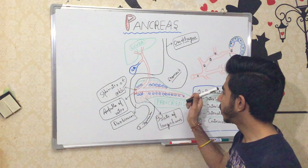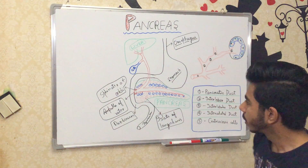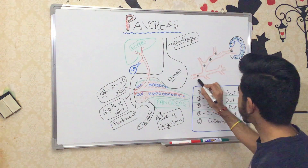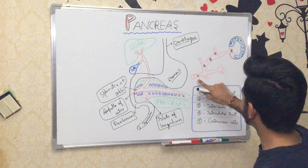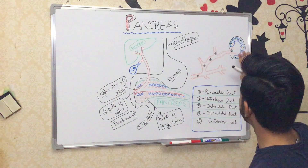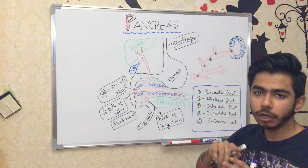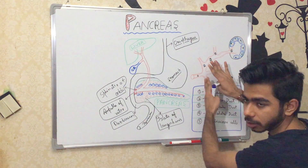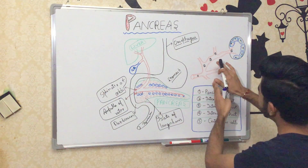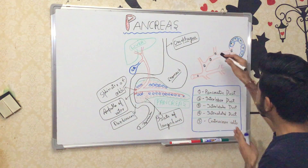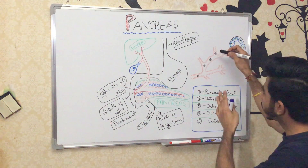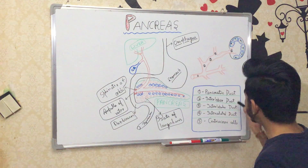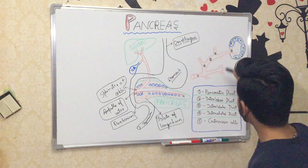Here I have drawn some detail of the pancreas. Number one is the pancreatic duct, which continues into the interlobar duct. The interlobar duct further divides into the interlobular duct, and the interlobular duct further divides into the intercalated duct. So the hierarchy is: pancreatic duct → interlobar duct → interlobular duct → intercalated duct.